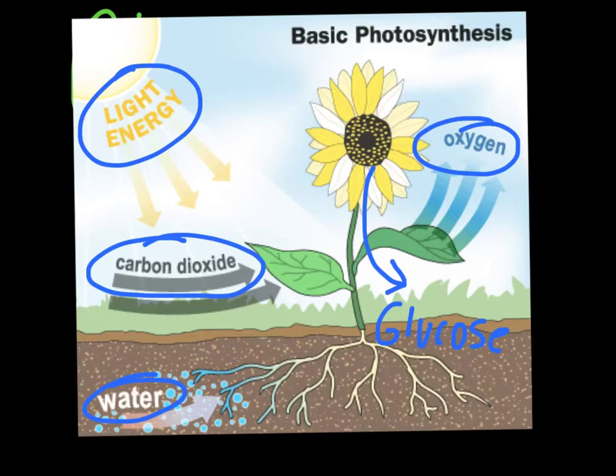Carbohydrates are usually what you get for energy from plants, and they're all based on glucose. Some of them might be more complicated things, like starches, which are just bigger carbohydrate molecules. But all of that stuff is built from glucose, so it all kind of starts at the same place.